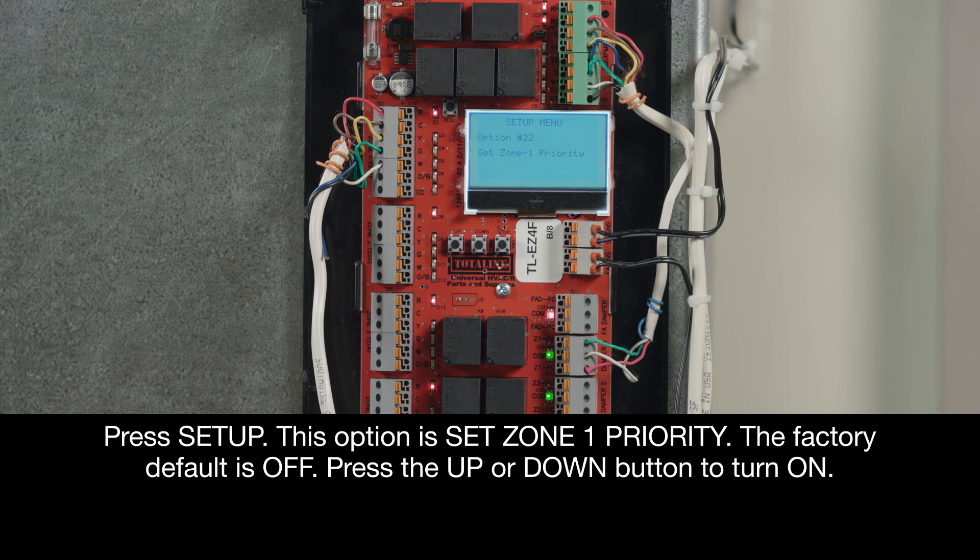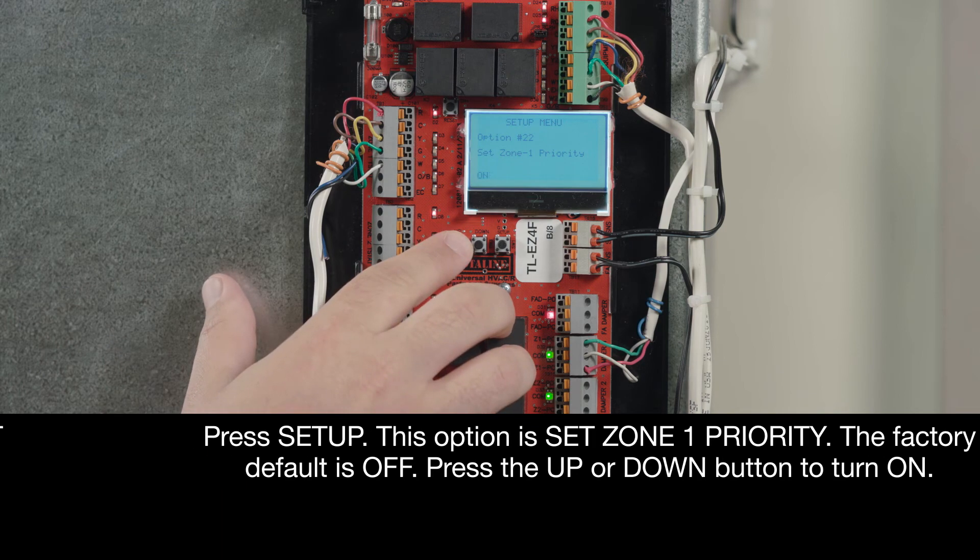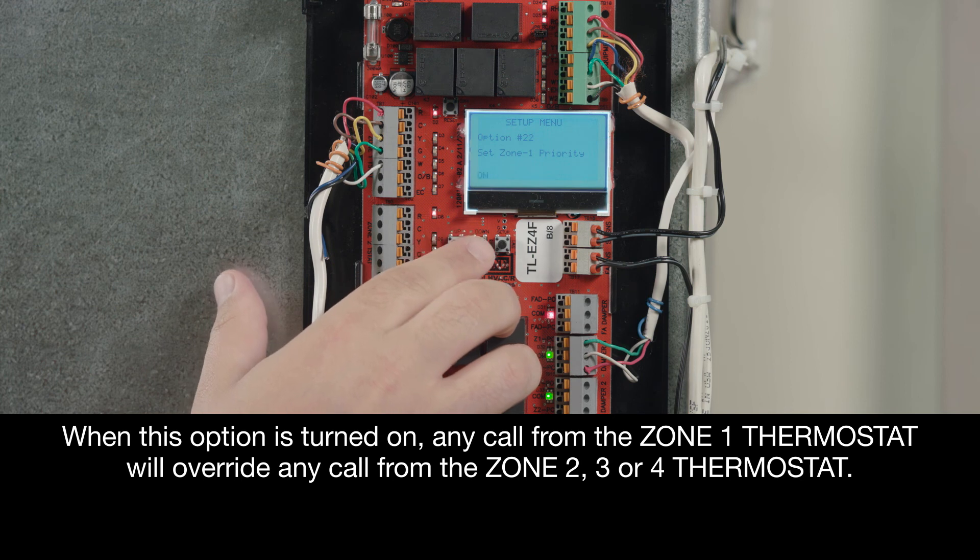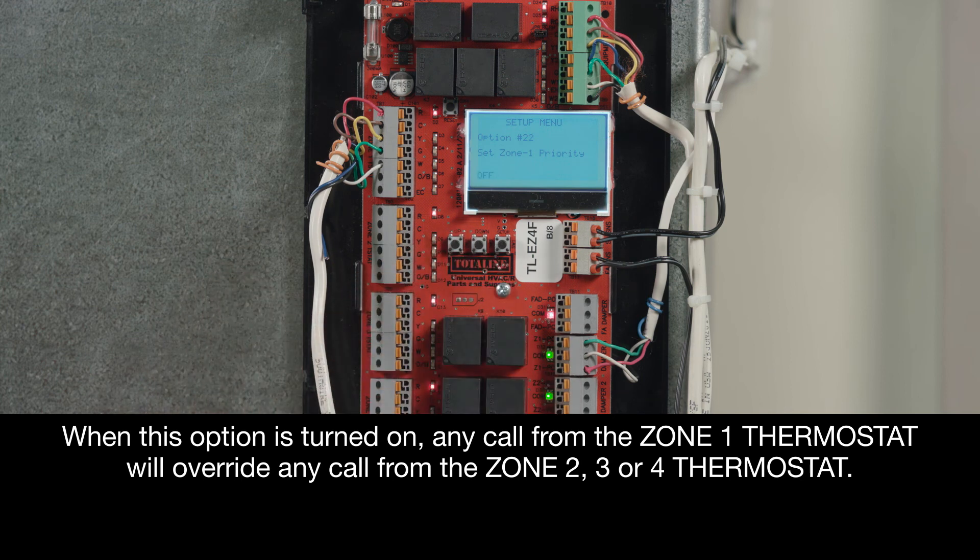This option is Set Zone 1 priority. The factory default is OFF. Press the Up or Down button to turn ON. When this option is turned ON, any call from the Zone 1 thermostat will override any call from the Zone 2, 3, or 4 thermostat.